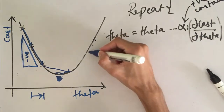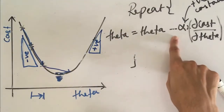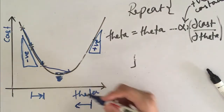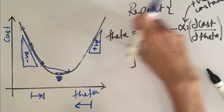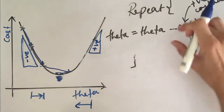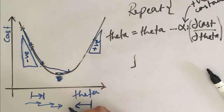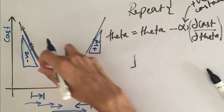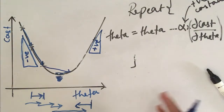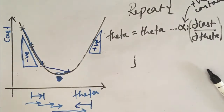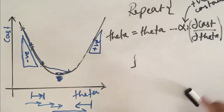If we are on the right half of the parabola, the slope is going to be positive. So theta minus a positive quantity means theta is going to decrease. Every time we repeat this equation, if theta was initially on either side it moves closer and closer toward the minimum. If theta overshoots, it backtracks and oscillates closer to the minimum. Repeating this step many times we eventually end up at the local minima.